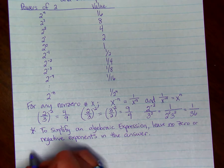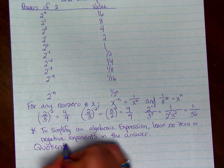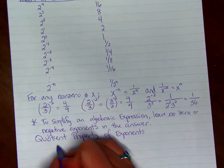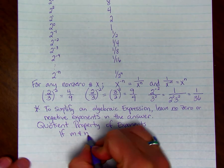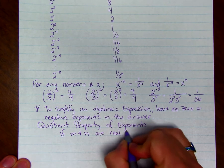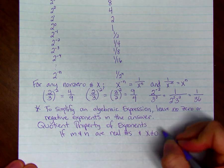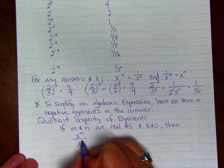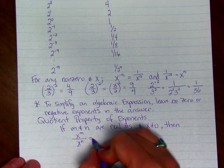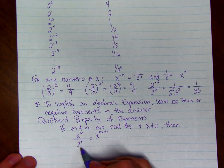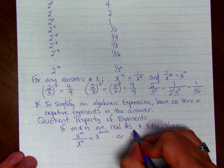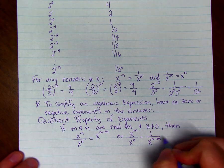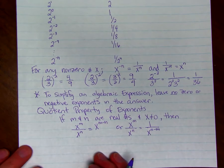So there is a quotient property of exponents that I wanted to teach you about. This just says if m and n are real numbers, and x does not equal zero, then x to the mth power divided by x to the n. So they have the same base x, and it equals x to the m minus n. So we can subtract exponents. Or, if n is bigger than m, we may want to make it 1 over x to the n minus m. That might help us keep our exponents positive. So here's an example.